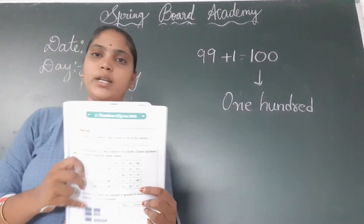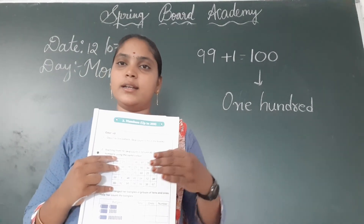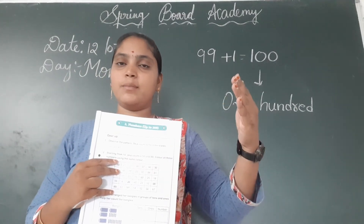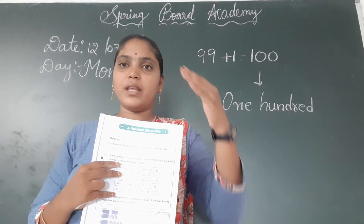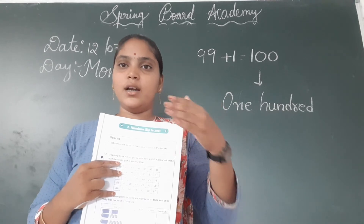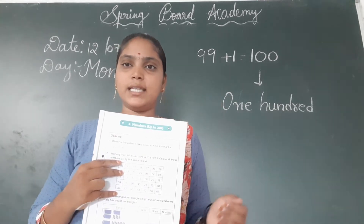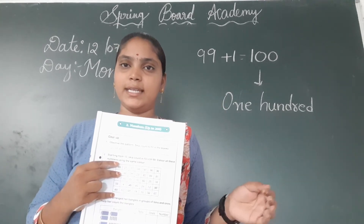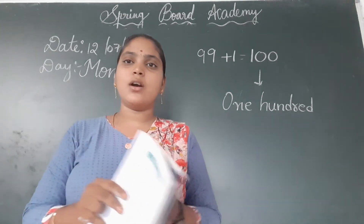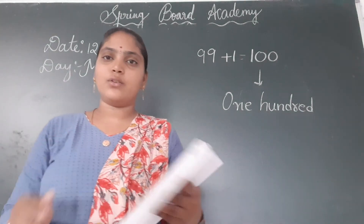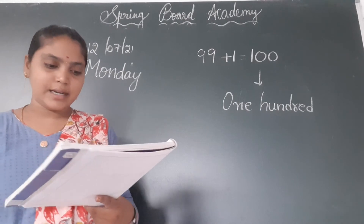So skip count in 10s children. First you have to color 10, then skip count in 10s: 20, 30, 40, 50, 60, 70, 80, 90. These numbers you have to color using only one color, children.